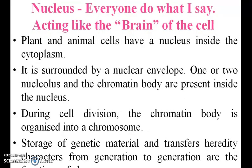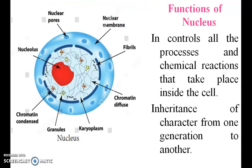Nucleus — the brain of the cell: the nucleus is surrounded by a nuclear envelope. One or two nucleoli and chromatin bodies are present inside the nucleus. During cell division, the chromatin body is organized into chromosomes. The nucleus controls all the processes and chemical reactions that take place inside the cell.